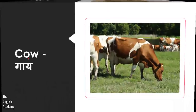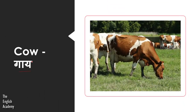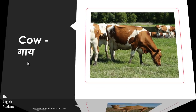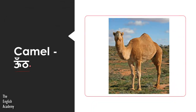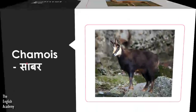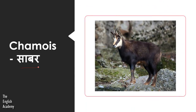The next animal is Guy, which we call Cow. Then we have Oont — Oont we know by the name Camel, and it is found in desert areas. Then we have Sabar, which is called Chamois.